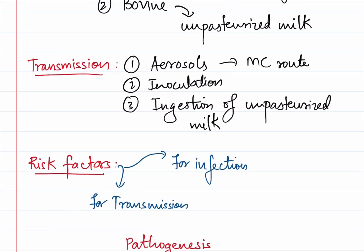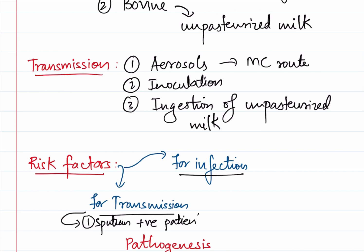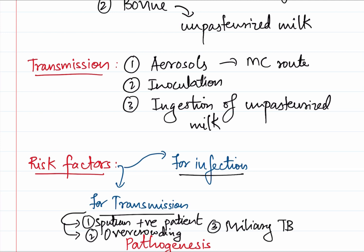Now what are the risk factors? There are risk factors for transmission and risk factors for active infection. We need to understand there are active cases and people who are sputum positive - people who do not have any external manifestations of TB, but their sputum contains Mycobacterium tuberculosis. For transmission, the first and most important group is sputum positive patients, as they transmit more effectively than sputum negative patients. Other reasons include overcrowding and miliary TB, which is a really active form of TB with a large number of cavitary lesions in the lung.